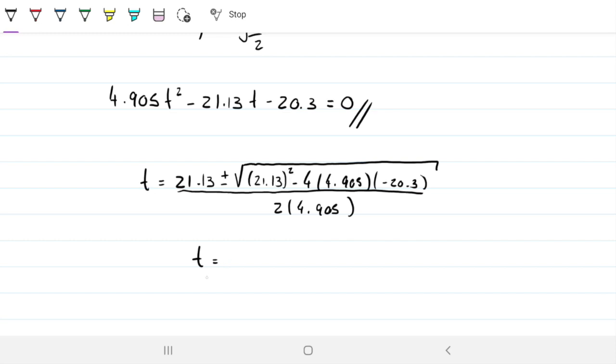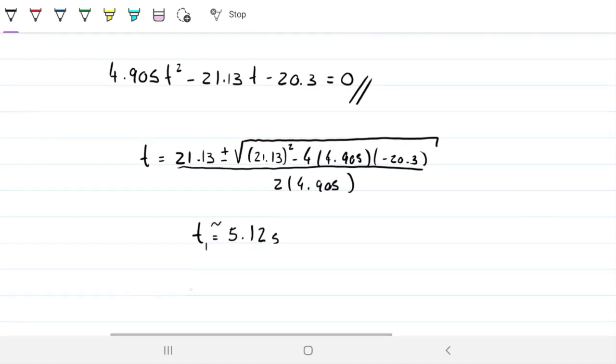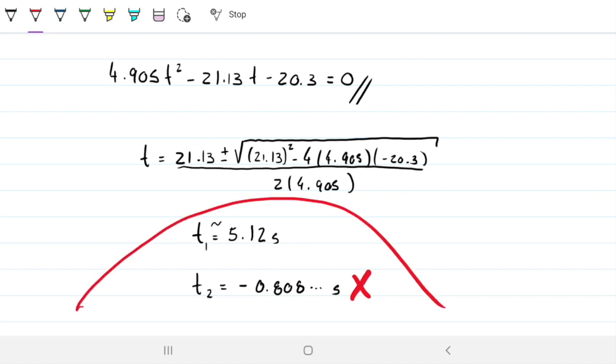That gives me t1 as being 5.12 like we found before, and my t2 is equal to negative 0.808. So like we knew before, one of the t's would be disregarded, the t on the negative of the parabola. On a time before the gopher hits the ball, it will fall on a negative time scale. So we can disregard that t2 there that we just found.